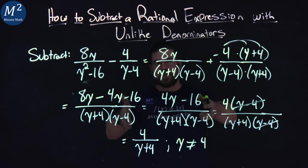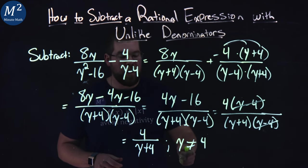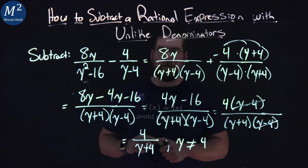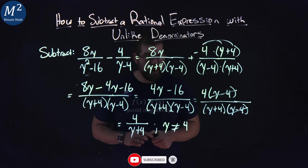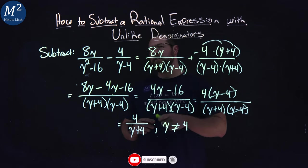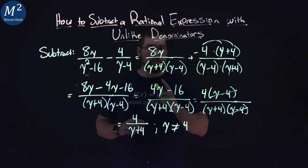So now, our final simplified answer: 4 over y plus 4, where y is not equal to positive 4. Hope you learned something about how to subtract a rational expression with unlike denominators. If you did, make sure you like this video and subscribe to our YouTube channel. This helps us make more free math lessons for everyone. Thanks for watching.